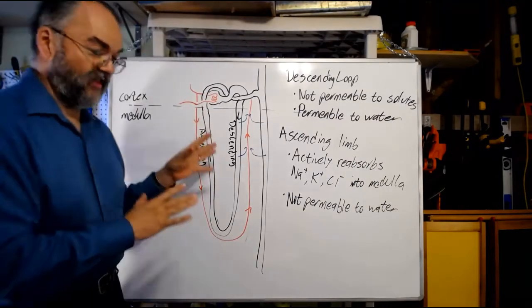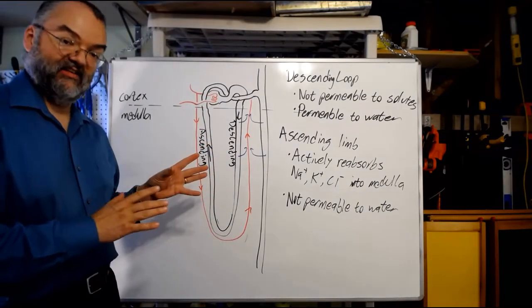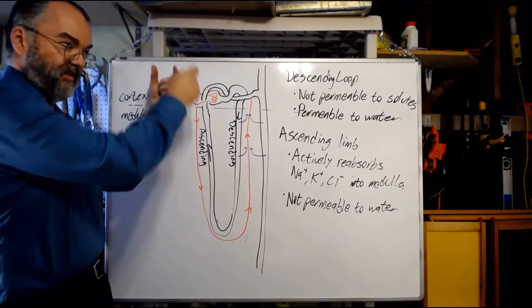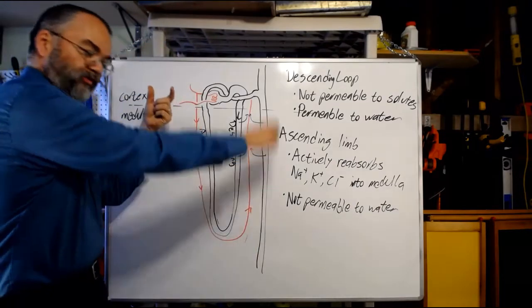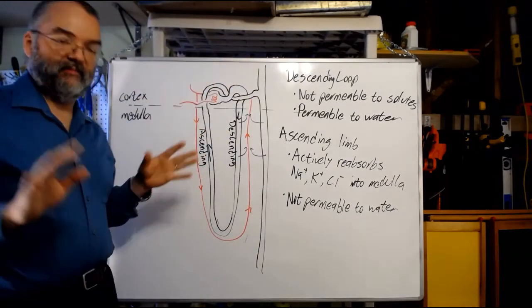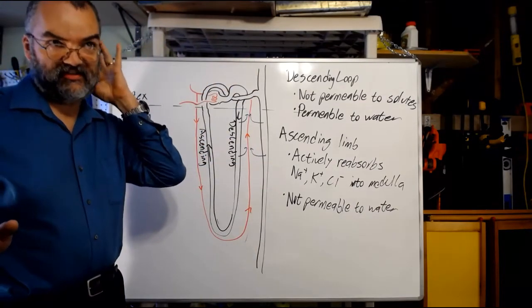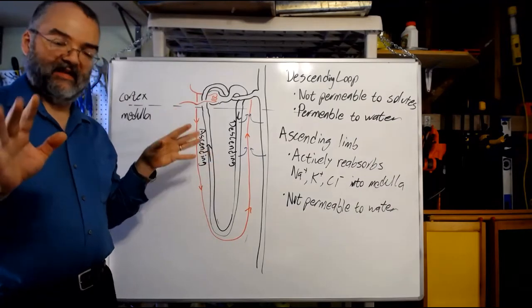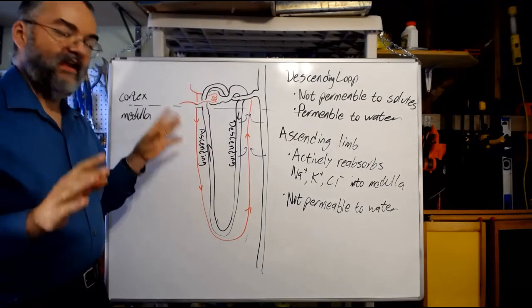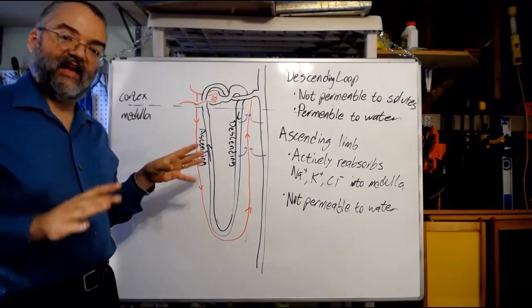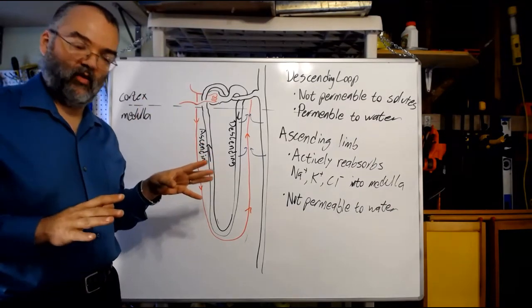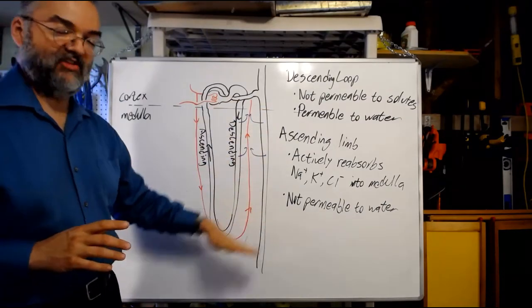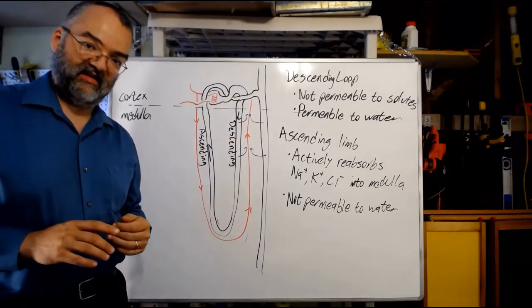Now I'm going to erase this and put in an unfolded loop of Henle — just because it'll make it a little easier to see what's going on and talk about how this makes the medullary osmotic gradient.